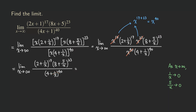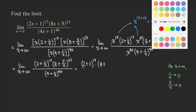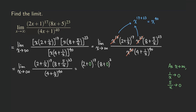So the limit becomes: (2 + 0)^17 times (8 + 0)^23, because the 1/x and 5/x terms approach 0. Simplifying, we get 2^17 times 8^23 in the numerator. In the denominator, (4 + 0)^40 gives us 4^40.